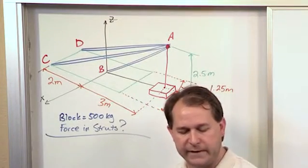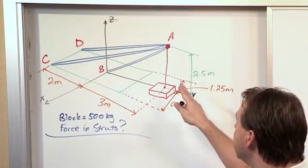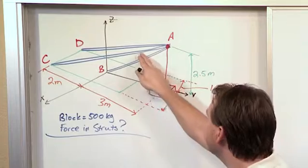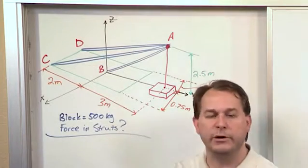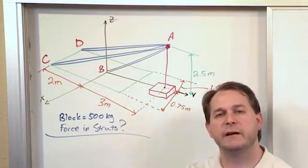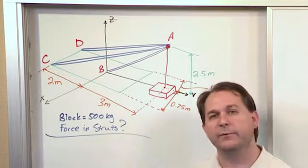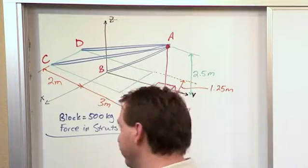So in order to find this out our basic strategy is we're going to find a force vector for this member, for this member, and for this member and then we know this thing's in equilibrium so we know that the sum of all the forces acting have to be zero. So once we get a vector representation of all the forces we just proceed as usual.